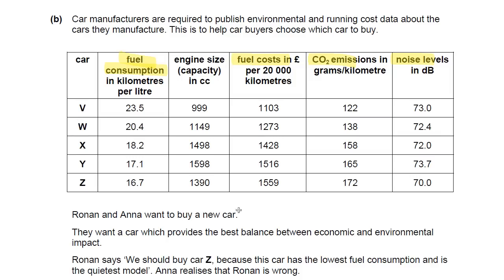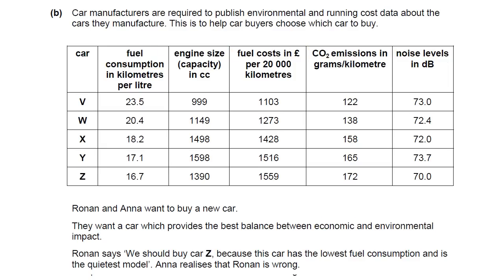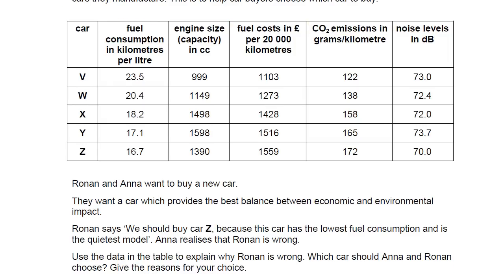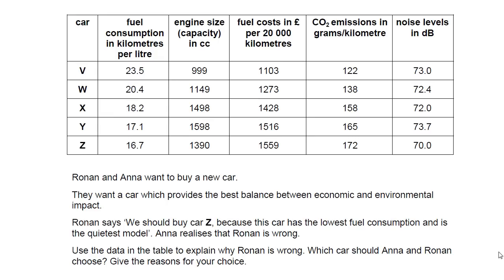Ronan and Anna want to buy a new car. They want a car which provides the best balance between economic and environmental impacts, so you're going to have to think about both at once and compare. Ronan says they should buy car Z because car Z has the lowest fuel consumption and is the quietest model. Anna realises that Ronan is wrong. Use the data in the table to explain why Ronan is wrong, and which car should Anna and Ronan buy — give your reasons.